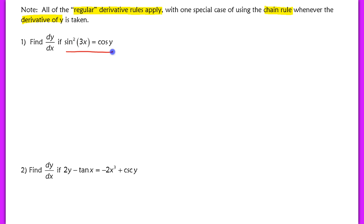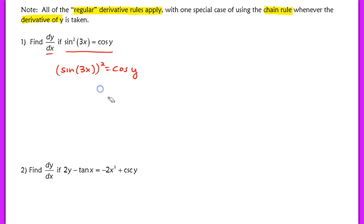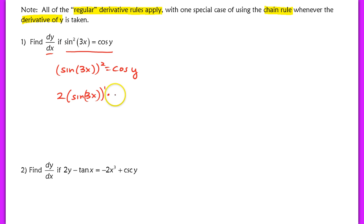Let's try our first example — an implicit equation that cannot be rewritten in explicit form, so we use implicit differentiation to find dy/dx. It helps to rewrite sine squared of 3x as the sine of 3x, quantity squared, equals cosine of y. This is primarily a squared function, so we bring down the 2: 2 times sine of 3x to the first. This is a composite function, so we apply the chain rule and multiply by the derivative of the inside. That inside function is also composite, so we multiply by cosine of 3x — the derivative of sine of 3x — then multiply by the derivative of 3x, which is 3.